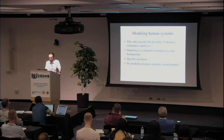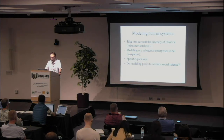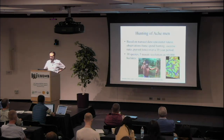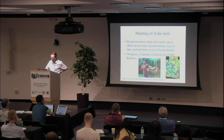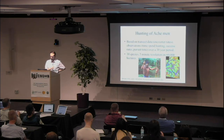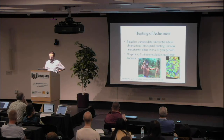Some advice: take into account the diversity of different theories, acknowledge this is a subjective enterprise, and focus on specific questions. I'll now show two examples of how we try to include social dynamics. One is about hunting by the Aché. I worked with Kim Hill, an anthropologist who spent 30 years in the Amazon studying the hunter-gatherers, hunting with them. He had an enormous amount of data and hours of anecdotes about how they chased armadillos — all fine, but it doesn't help me develop a model.